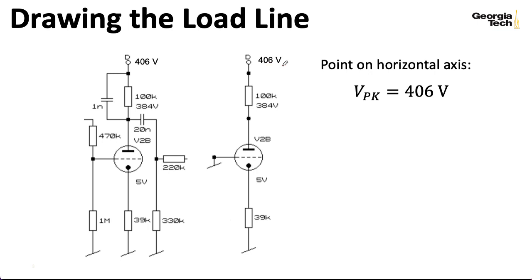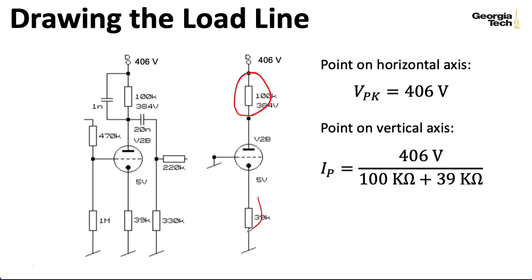So we need another point, and for that we can imagine the point where none of the voltage drops across the triode, and all of it is dropping across the resistors. So I can use Ohm's law and find that that turns out to be 2.9 milliamps.